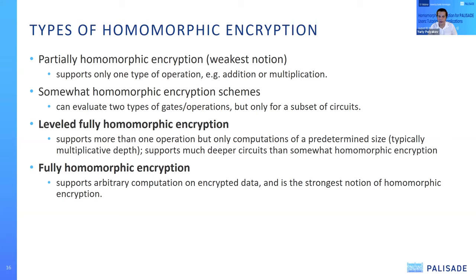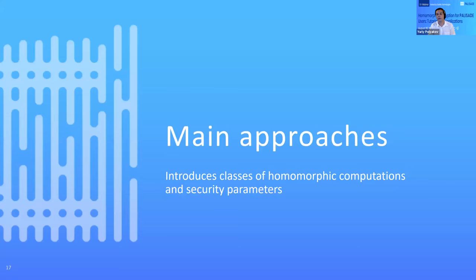Now moving to the main approaches of homomorphic computations. There are multiple schemes and computation models supported. We classify schemes into the types of computations they support. The first type: Boolean circuits represent plaintexts as bits and computations are expressed as Boolean circuits — Dave will provide more detail on this. The second approach is modular or exact arithmetic, where plaintext data is represented as integers modulo a plaintext modulus.